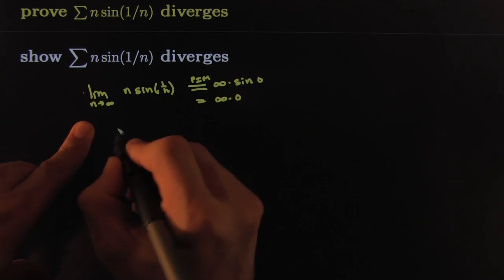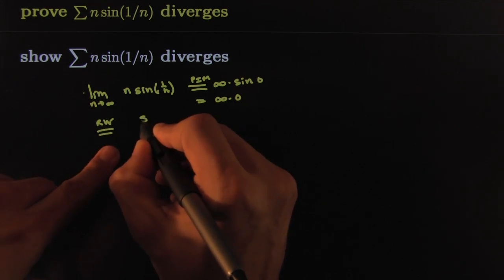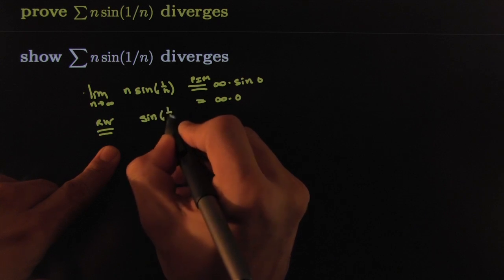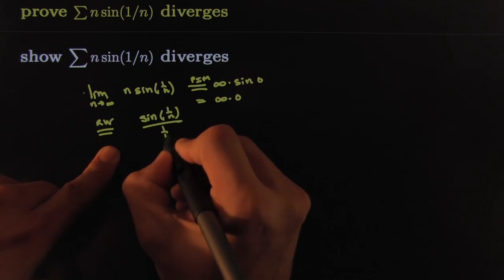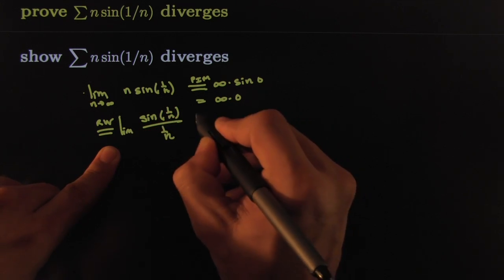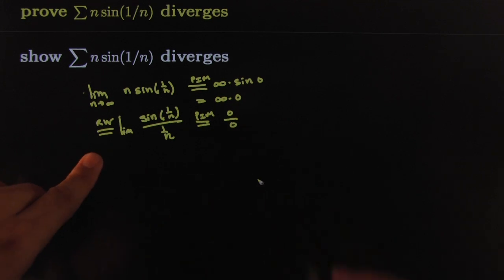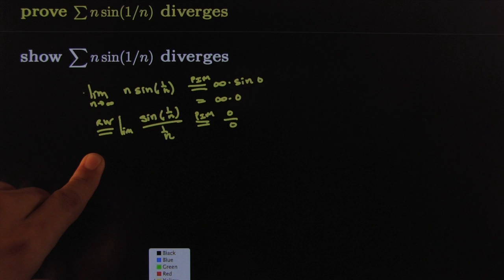So I still don't know what that limit is. I could tweak it a little bit, maybe just a little rewrite. I could say this is sine of one over n all over one over n, and now if I try the plug-in method, that would give me zero over zero—yippee!—because now I can use the